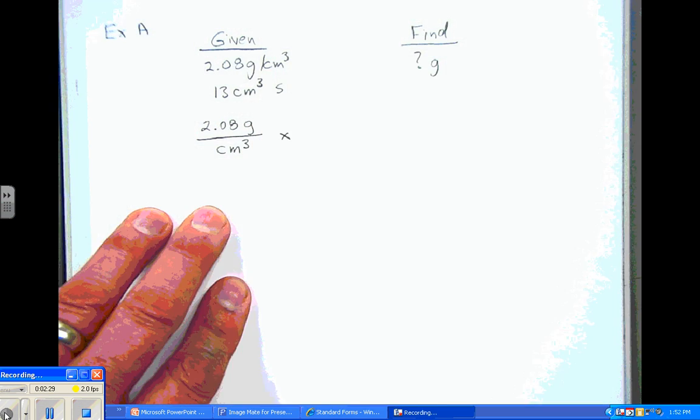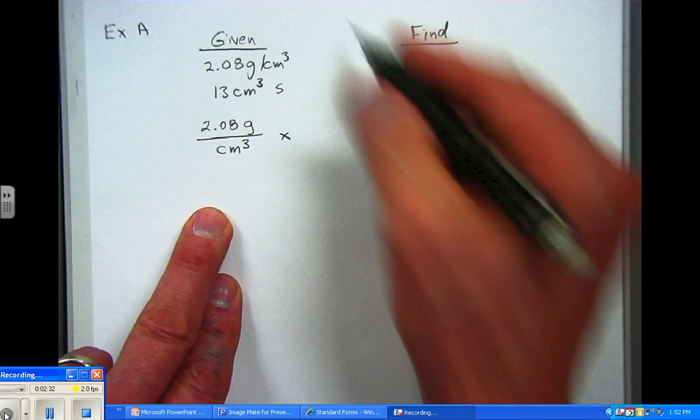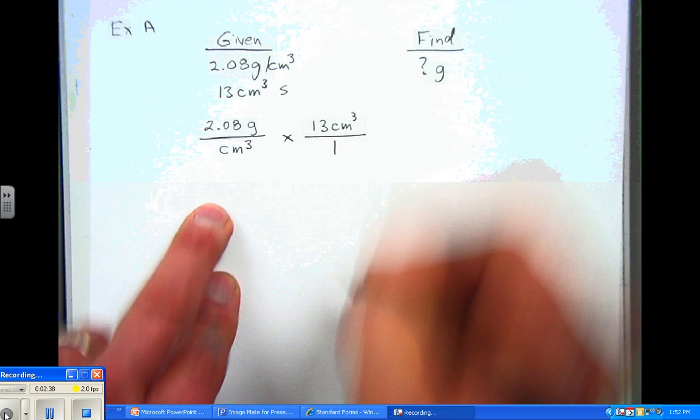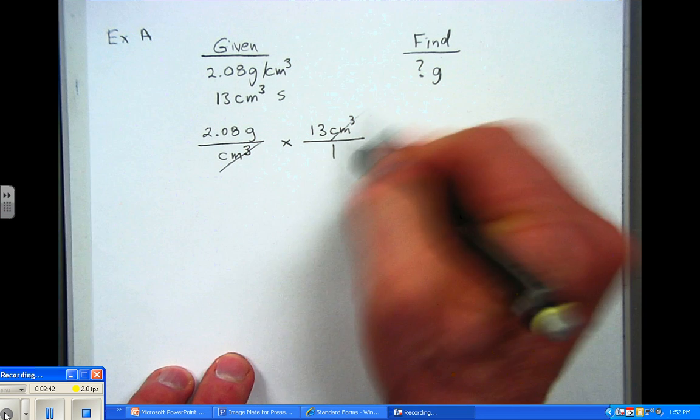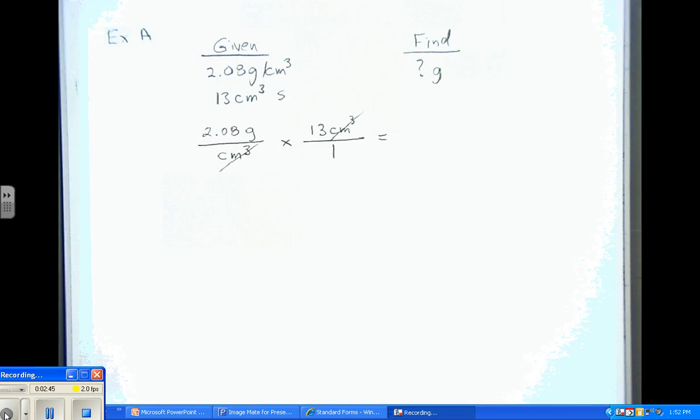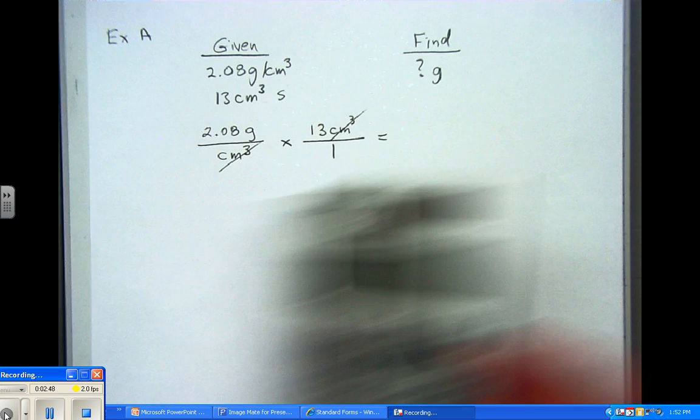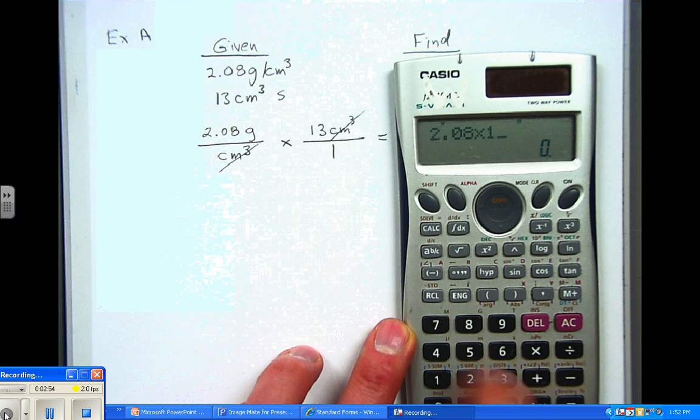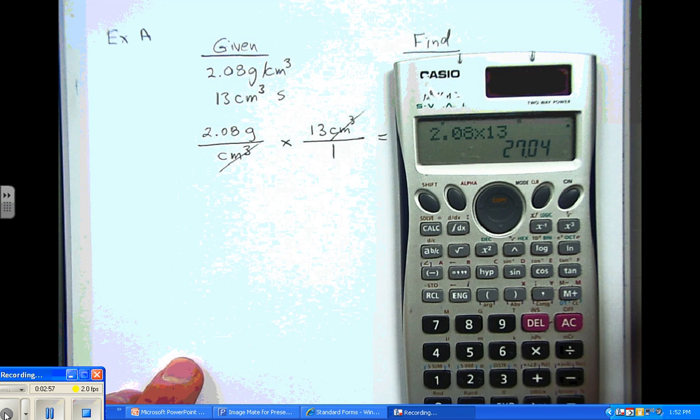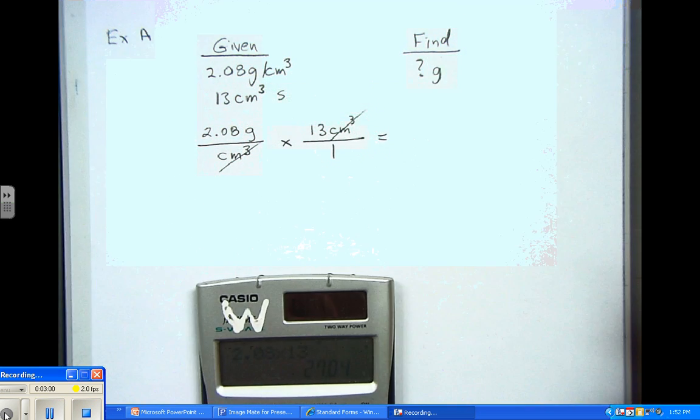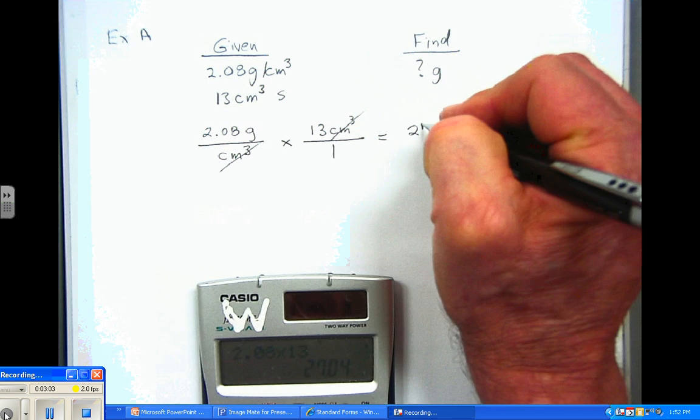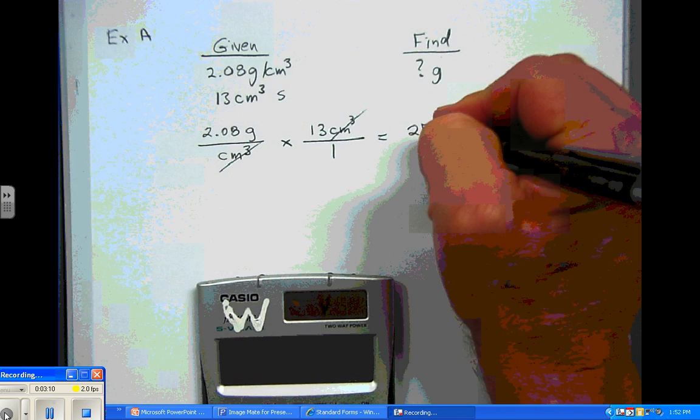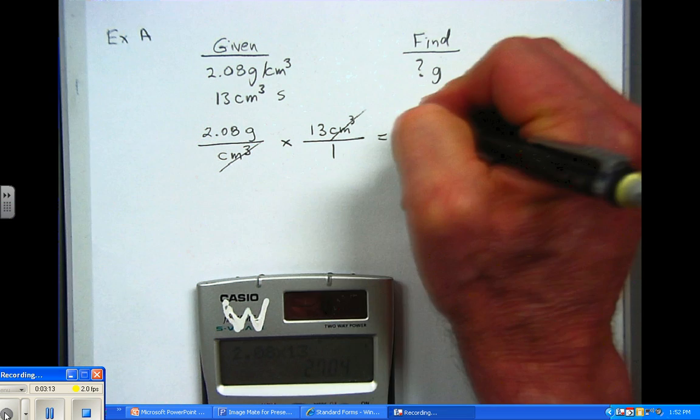Now, the next thing we do is we take how many cubic centimeters we have and we put that over 1 to be multiplied times this. And you'll see that the cubic centimeters are going to cancel, and now we just pull out our calculator and we run the numbers. So we're going to put 2.08 times 13, and that comes out to 27. I'm going to explain to you later why this is 27 and not 27.04 like you see on your calculator. It's simply 27, and this is 27 grams of sulfur, and that's our answer here.